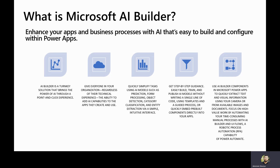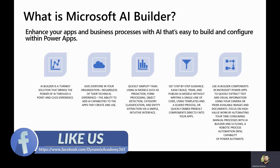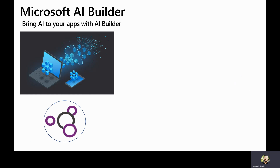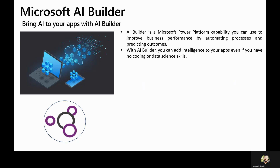You can use AI Builder components in Microsoft Power Apps to quickly extract text and visual information using your camera or from available images and documents. You can also focus on high-value work by automating time-consuming manual processes with the help of AI Builder and UI flows, which is a robotic process automation capability of Power Automate. AI Builder is a Microsoft Power Platform capability you can use to improve business performance by automating processes and predicting outcomes.